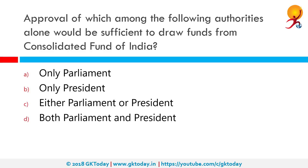Approval of which among the following authorities alone would be sufficient to draw funds from the Consolidated Fund of India? The Consolidated Fund is the chief account of the Indian government, containing income from tax and non-tax revenues. Withdrawing money from this fund requires the approval of Parliament. The Contingency Fund has a fixed deposit of Rs 500 crore.